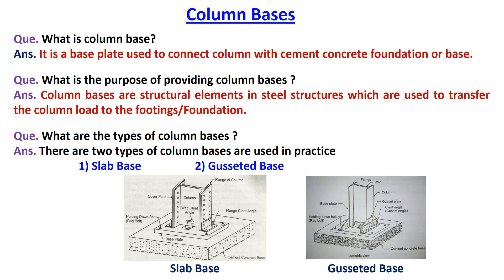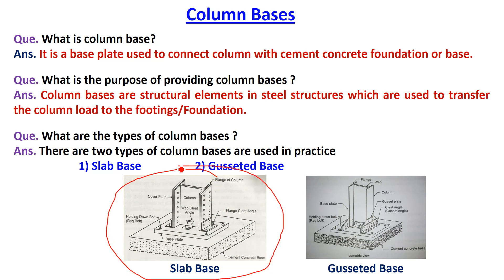The very first question is: what is a column base? A column base is a base plate which is used to connect the bottom of a column with the top of a cement concrete base. If you look at this figure, this is the concrete foundation and this is the steel column. To connect this steel column with the concrete foundation, whatever base plate is used, the design of this base plate is nothing but the design of column base. So this base plate is called a column base.